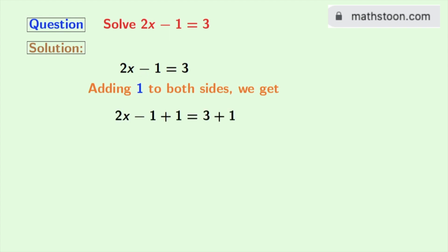By doing so, we will get 2x minus 1 plus 1 is equal to 3 plus 1.